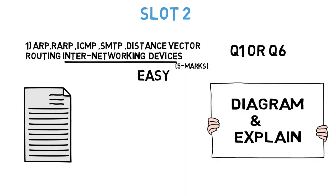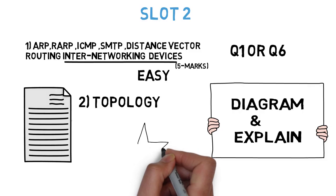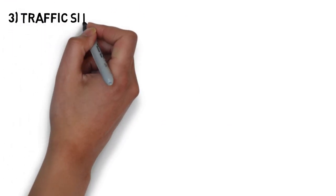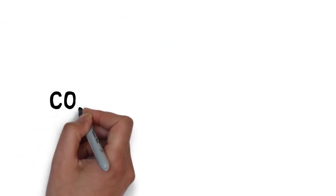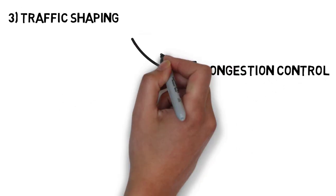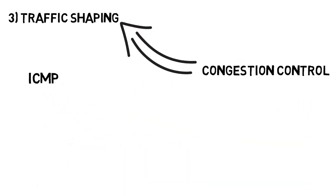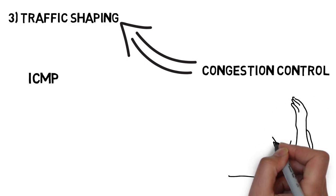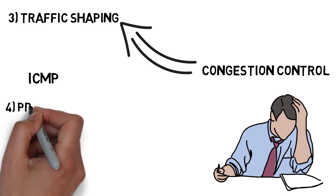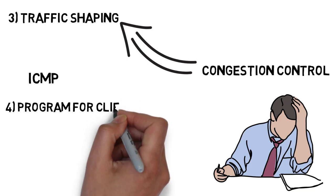The next question for Slot 2 is: what is topology? Explain different types of topology with diagram, advantages and disadvantages — mainly star, ring, etc. This can come for five to ten marks. After that: what is traffic shaping? Explain the leaky bucket algorithm and compare it with the token bucket algorithm. Once you understand congestion control, jump to traffic shaping and you can easily write the difference between leaky bucket and token bucket.